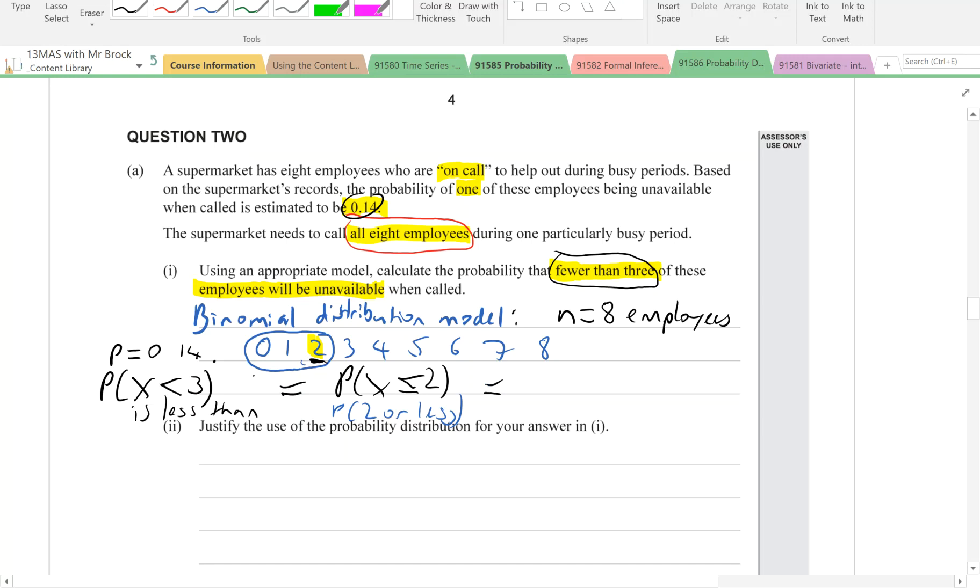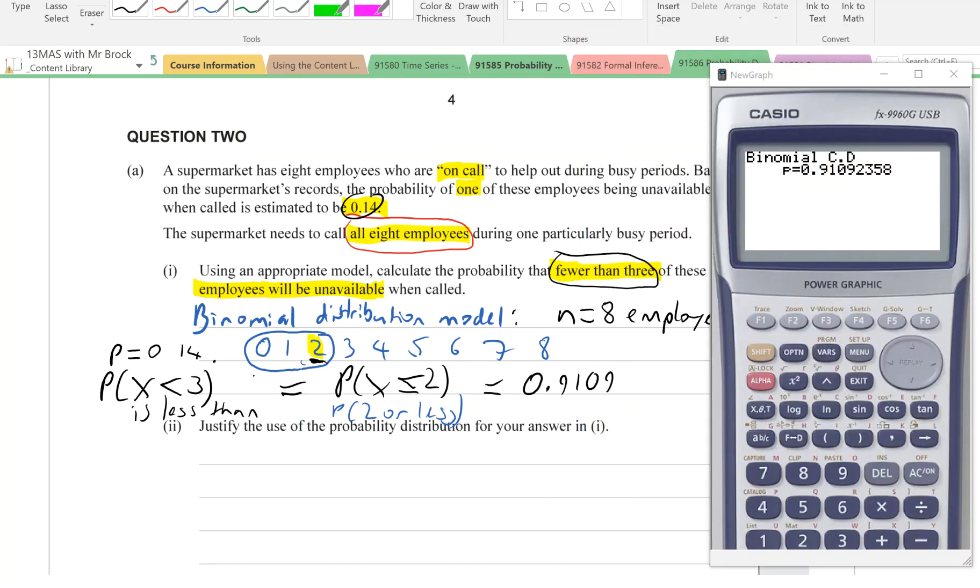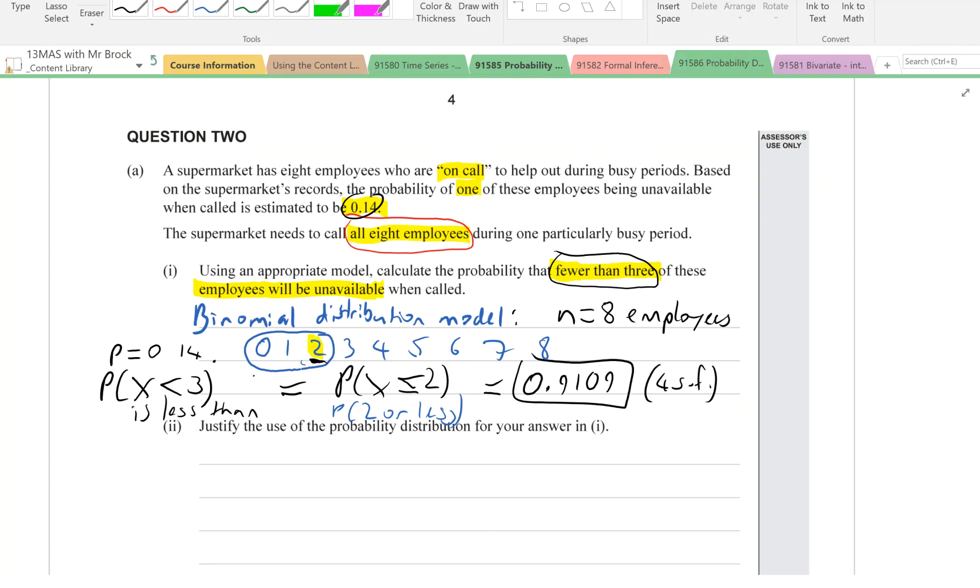And it equals 0.9109. Rounded to four significant figures. And because we used our graphics calculator, we're going to write GC so the examiner knows that's how we got it.